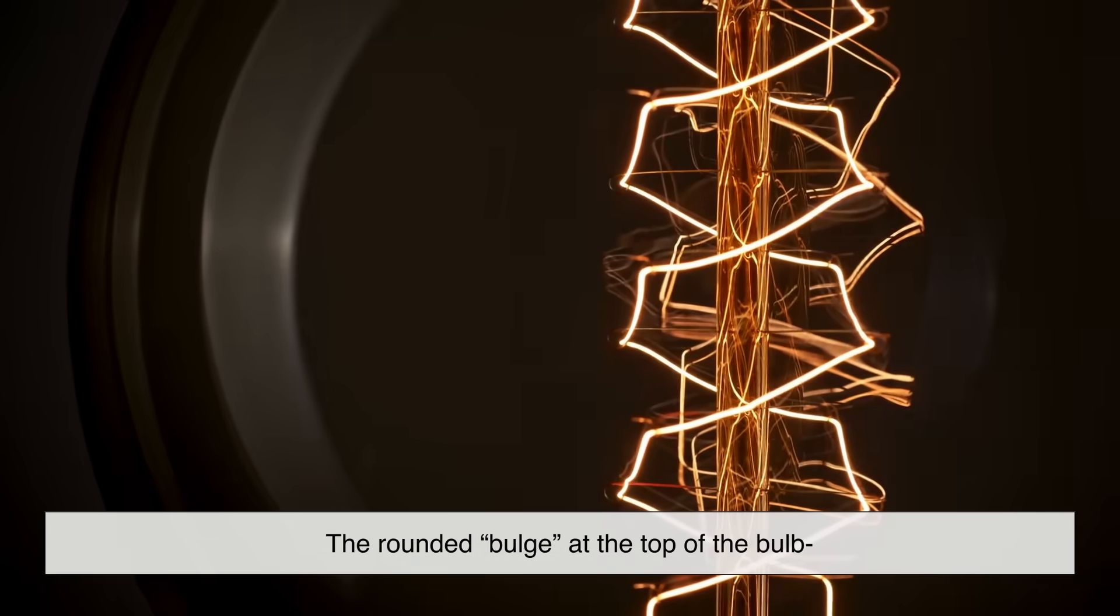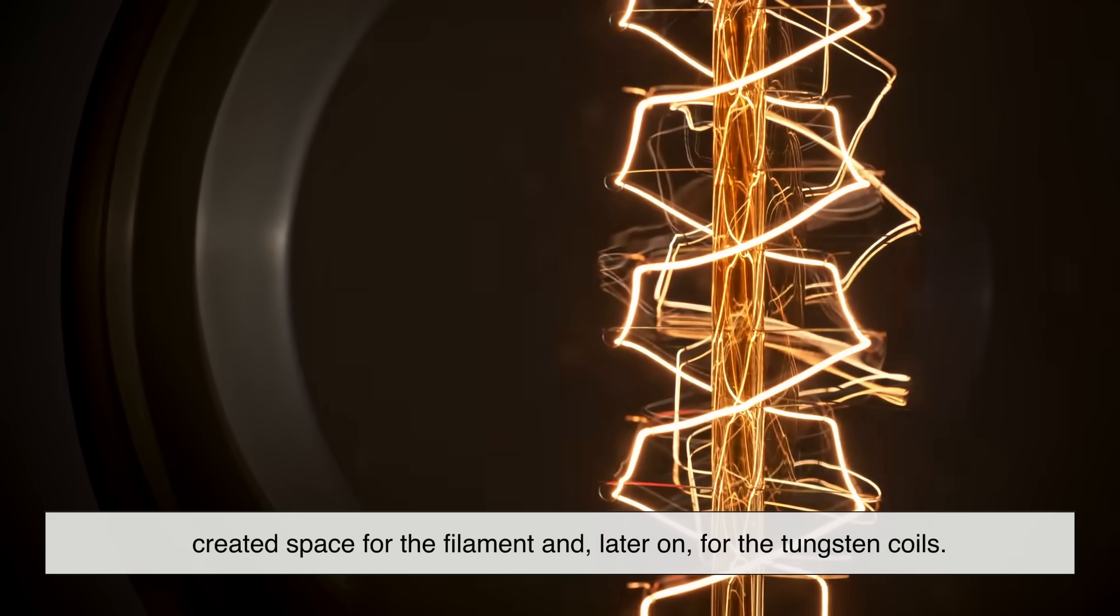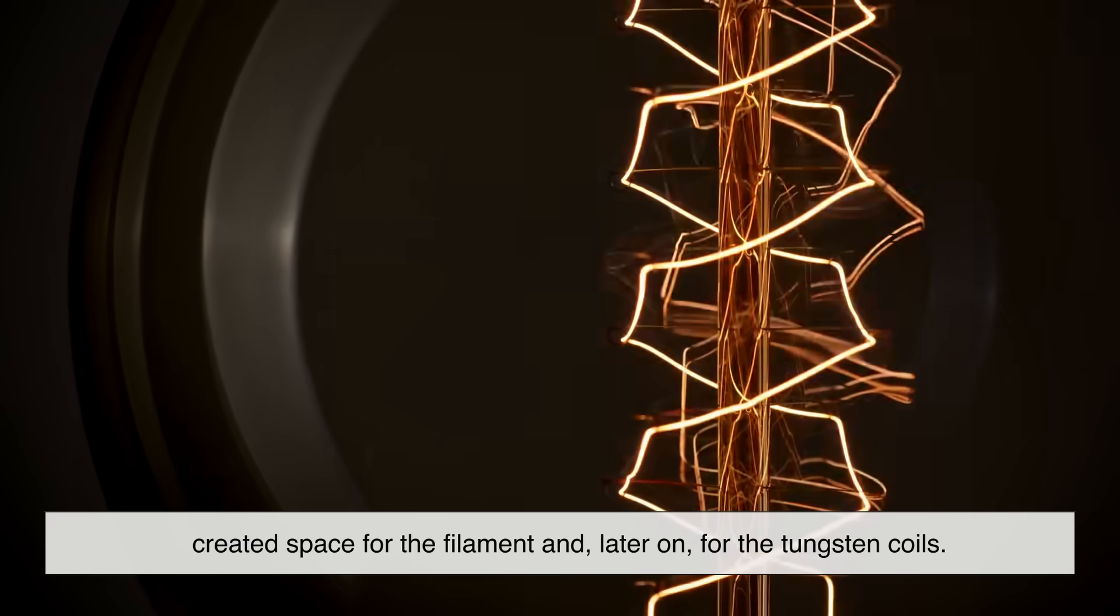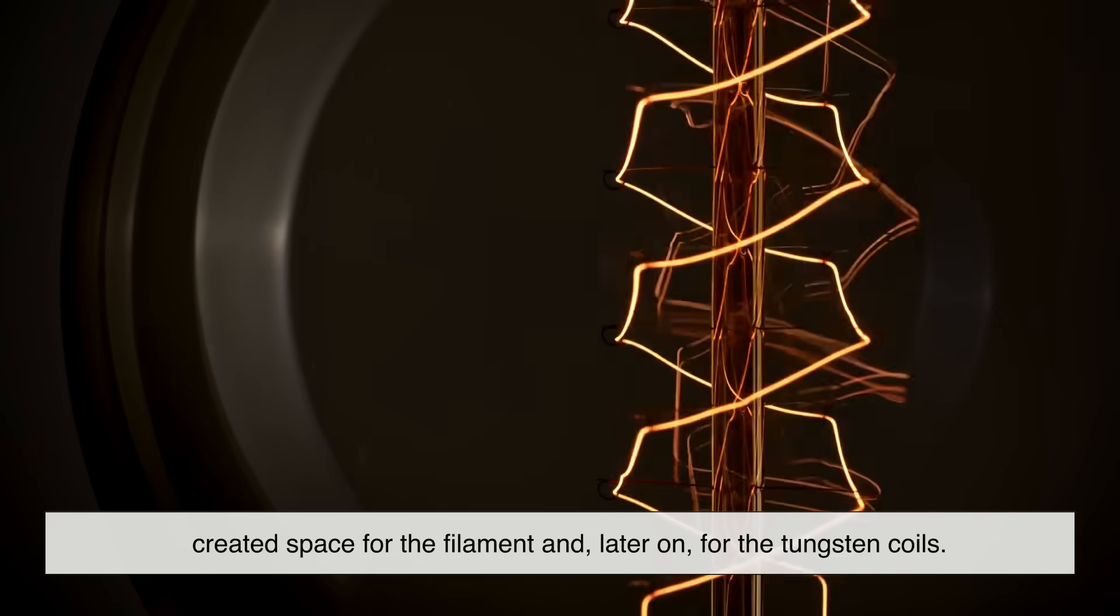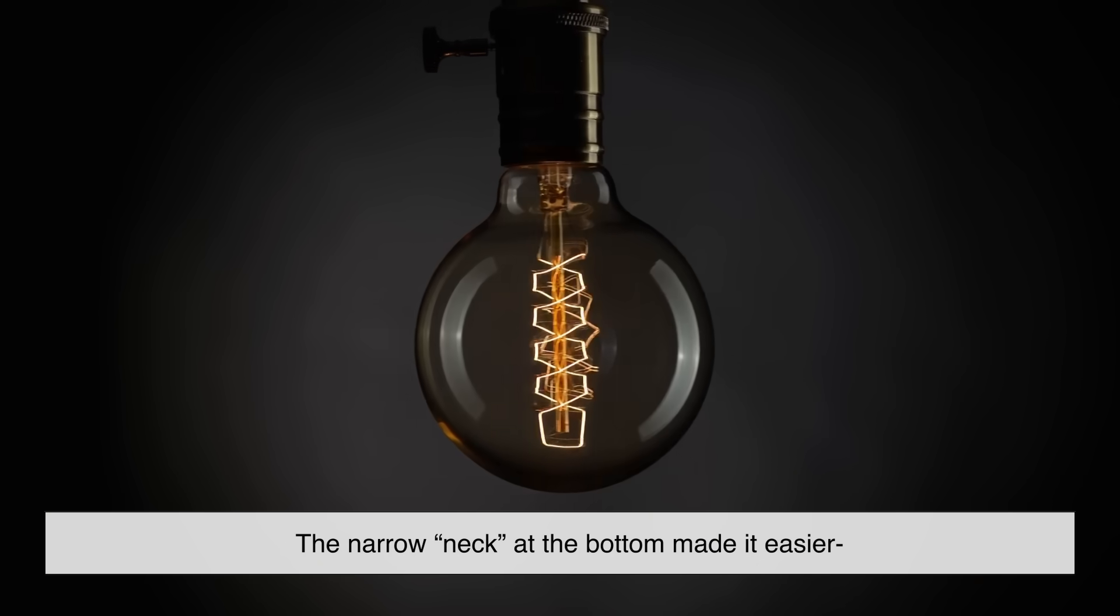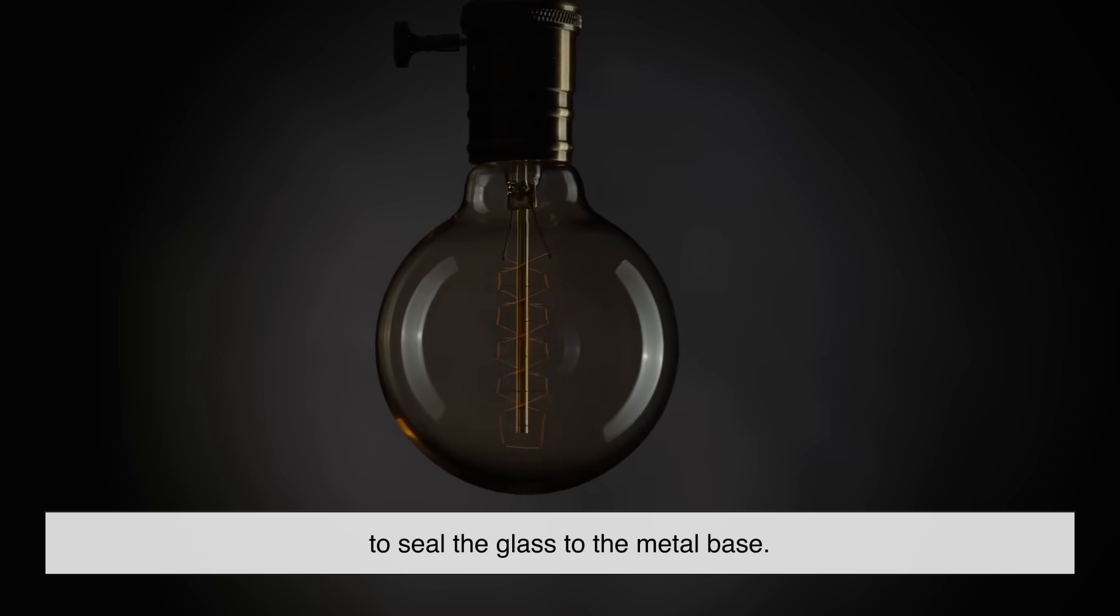The rounded bulge at the top of the bulb created space for the filament, and later on, for the tungsten coils. The narrow neck at the bottom made it easier to seal the glass to the metal base.